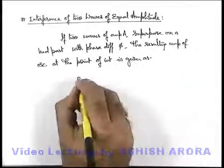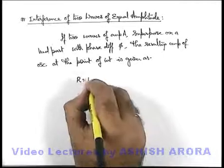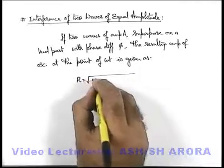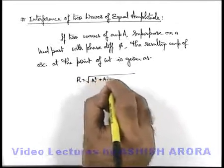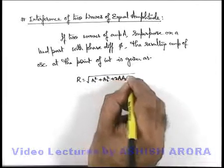Here we can write this R, as we already studied, it is given as root of A1 square plus A2 square plus 2 A1 A2 cos φ.